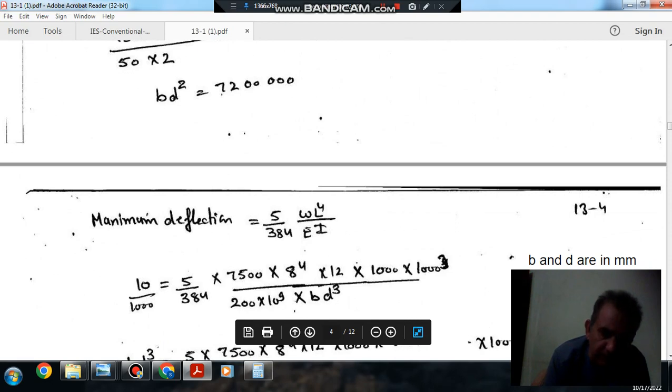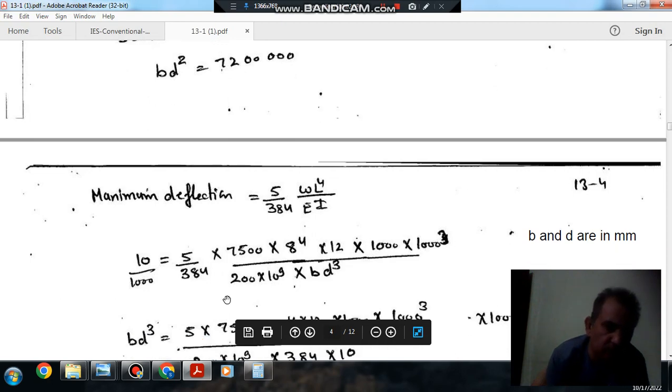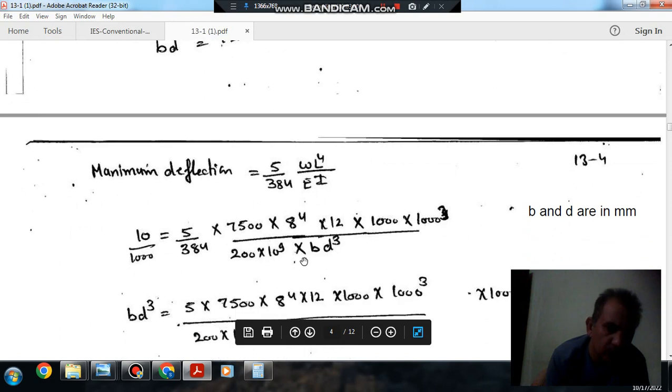And changing B which is in mm to meter by dividing it by 1000, and changing D which is in mm by dividing it by 1000 cubed. And E is here 210. So now originally B and D are in mm, but we have divided, so B divided by 1000 is in meters and D cube divided by 1000 cube is in meters, but B and D are in mm.